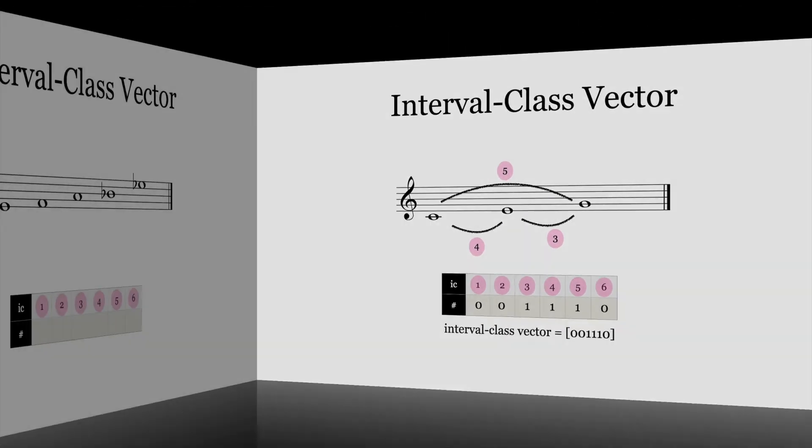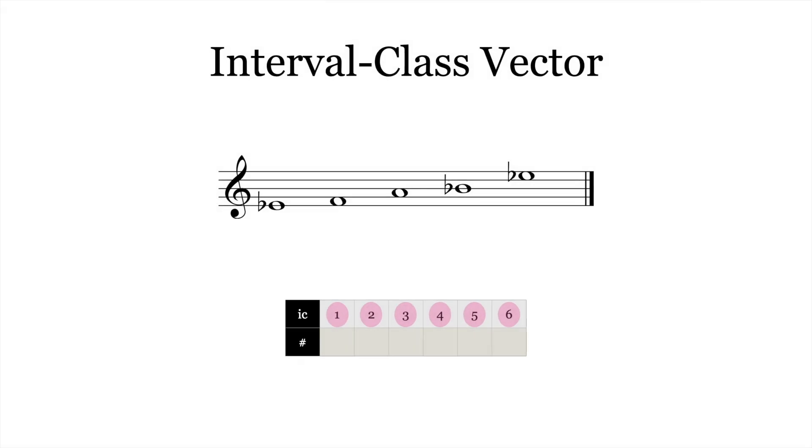This example, which consists of four pitch classes, contains one instance of interval class one, one instance of interval class two, one instance of interval class four, two instances of interval class five, one instance of interval class six, and zero instances of interval class three, and is represented by the following vector.